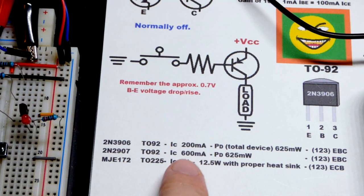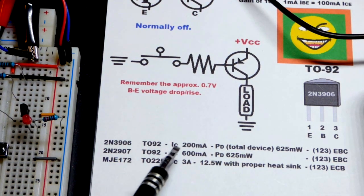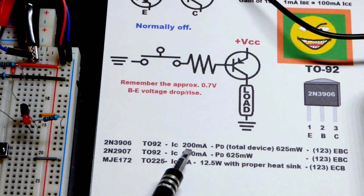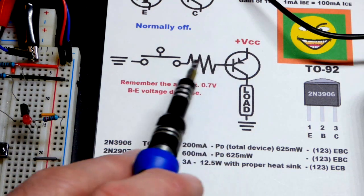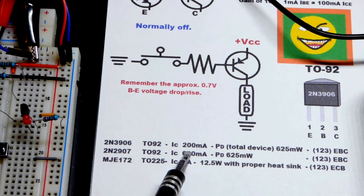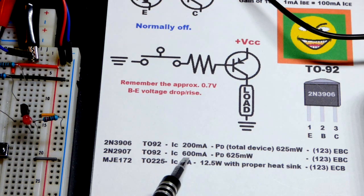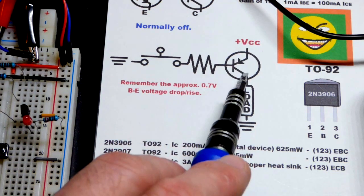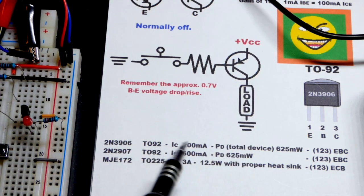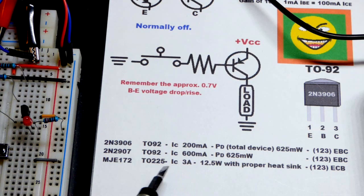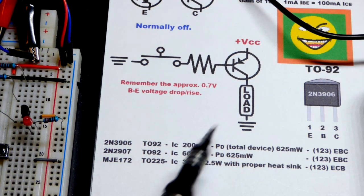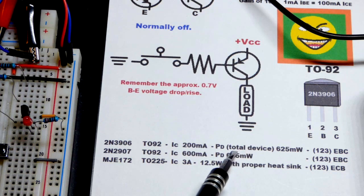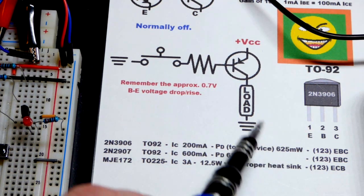That's actually the collector current right there. Collector current, we can handle up to about 200 milliamps. Remember though, that it's the source of current coming out of it. That kind of makes sense, but you may see negative 200 right there. Main thing to know is that it's 200 milliamps of current. And a total device power of 625 milliwatts.